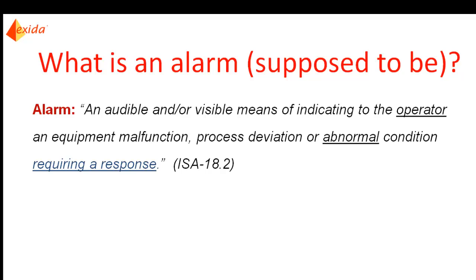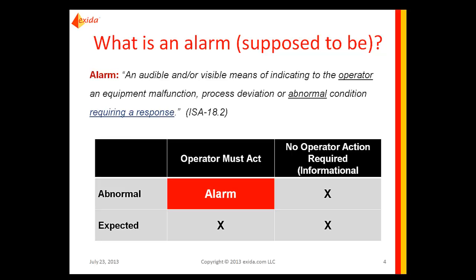If the operator does not need to perform a corrective action, like opening a valve or turning on a pump, then the point should not be an alarm. Alarm overload and nuisance alarms are oftentimes caused by alarms that don't really meet the criteria — they don't represent an abnormal condition or require the operator to take an action. The purpose of alarm rationalization is to ensure that each alarm meets the criteria as defined in ISA 18.2 and in your alarm philosophy document.